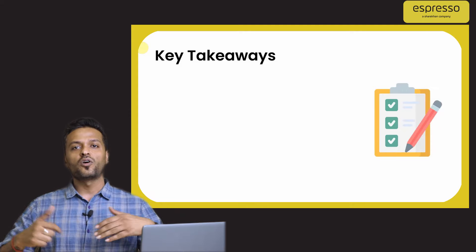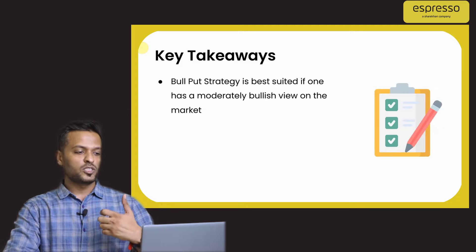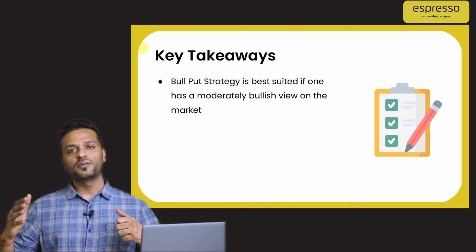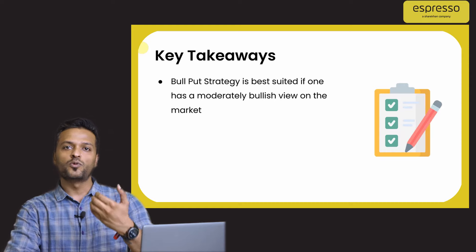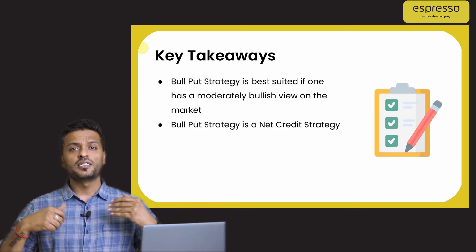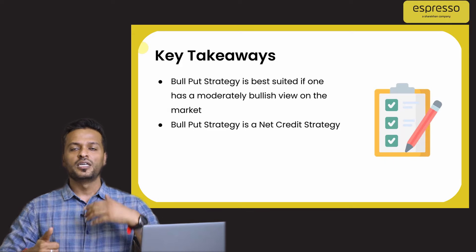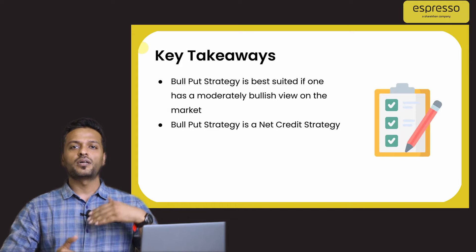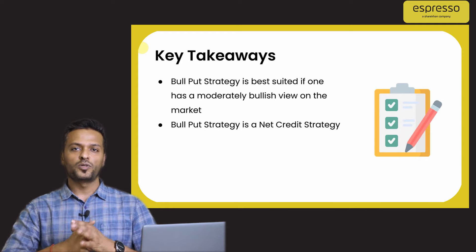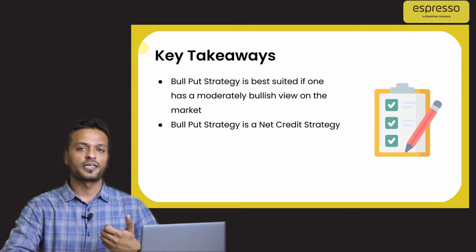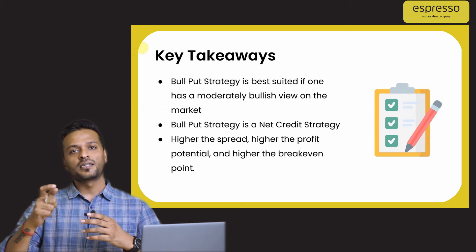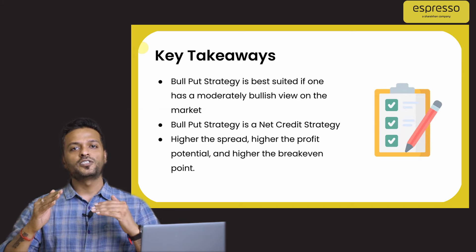The key takeaways: bull put strategy is best suited for a moderately bullish view — if you have a bigger view, other strategies can get more gains. Bull put strategy is a net credit strategy, meaning there is an inflow of capital at entry, because the at-the-money put option has more premium than the out-of-the-money put option. Importantly, the higher the spread between the at-the-money and out-of-the-money contracts, the higher your profit potential, but that also comes at the cost of higher potential losses — the spread difference defines your risk and reward.